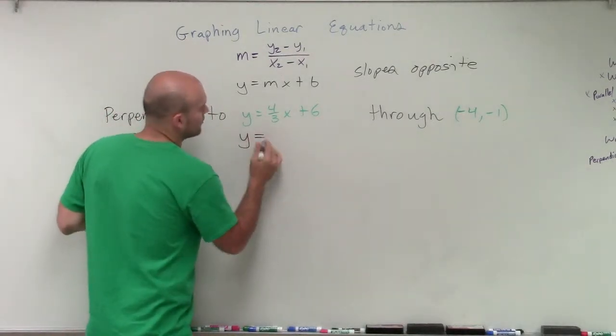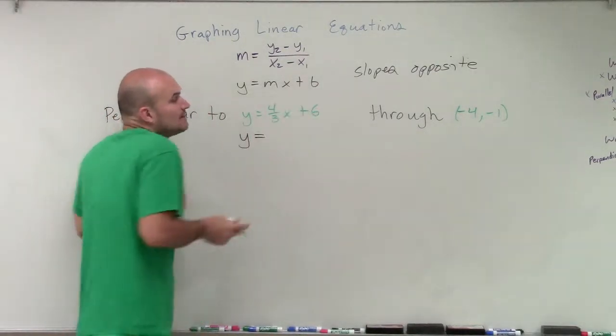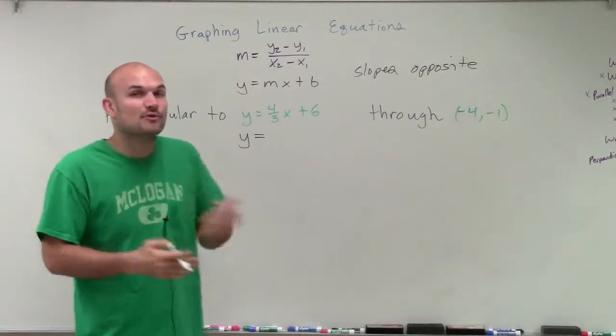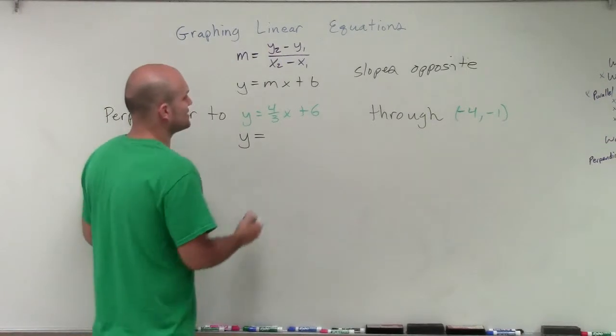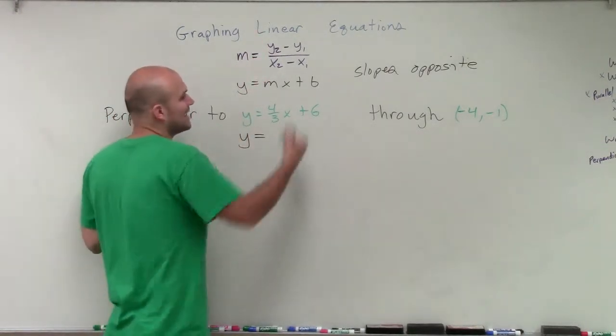So the first thing, remember, we know that sometimes they might have the same y-intercept or not, but the main important thing about the slope, parallel lines had exactly the same slope. But perpendicular lines, remember, if one was positive, the other one had to be negative.